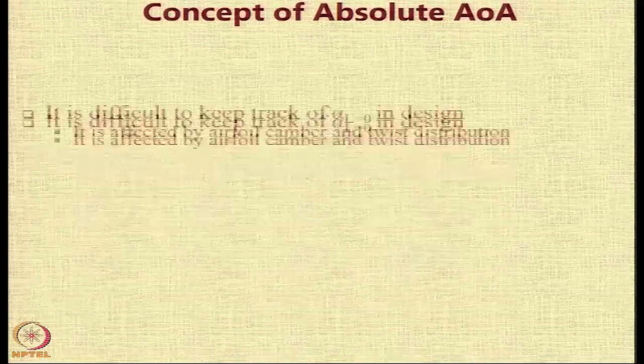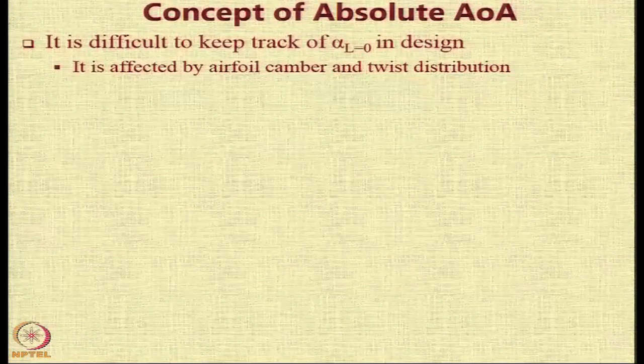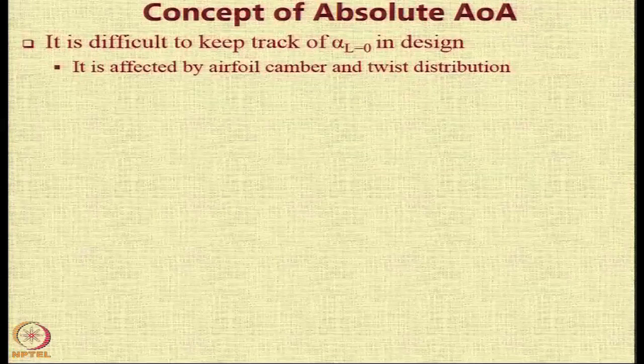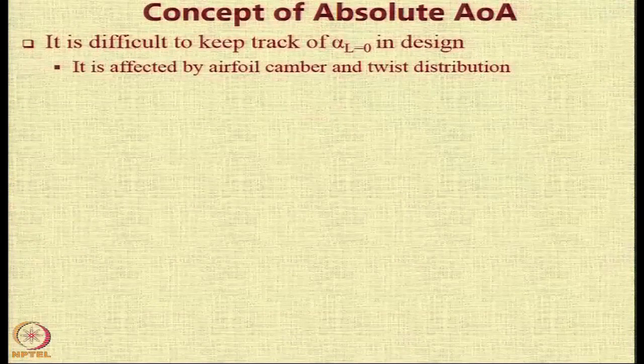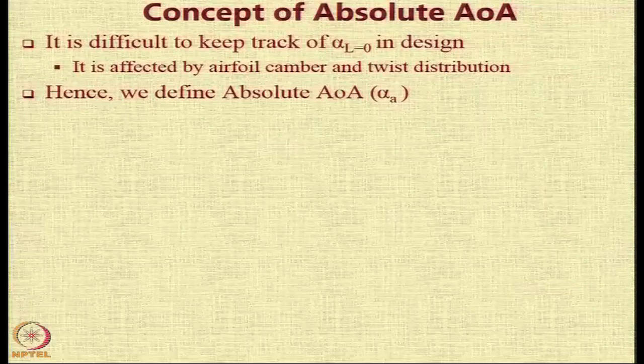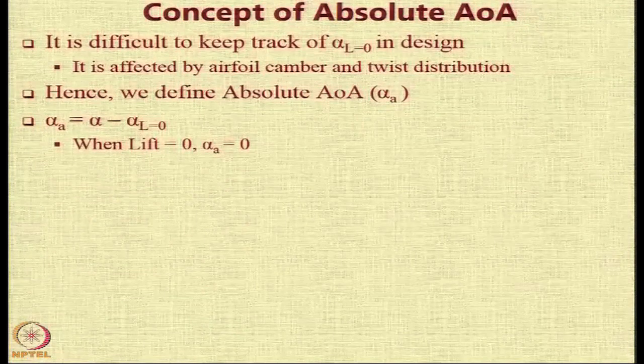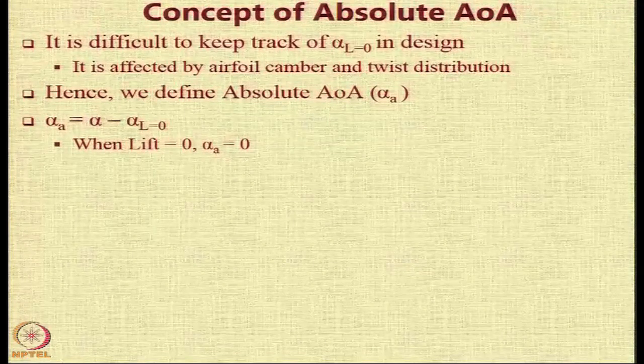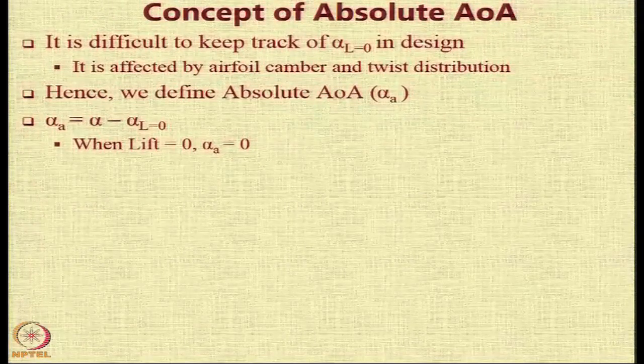Let us understand the concept of absolute angle of attack before we go ahead. There is one angle alpha at which lift is equal to 0 that is called as the alpha 0 lift. It is difficult to keep track of this particular parameter because it is affected by the twist distribution and by the airfoil camber. What we do is we define an absolute angle of attack we call it alpha a such that alpha a is defined as the geometric angle of attack alpha minus alpha l equal to 0. When lift equal to 0 then alpha a equal to 0.